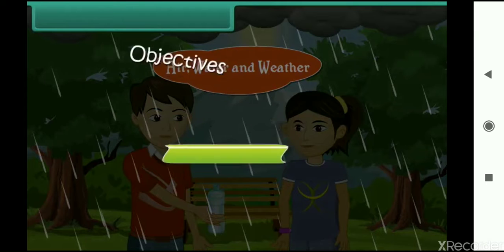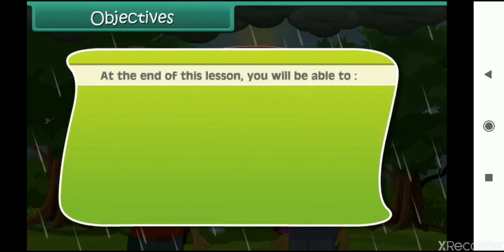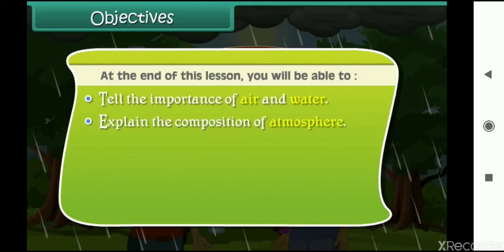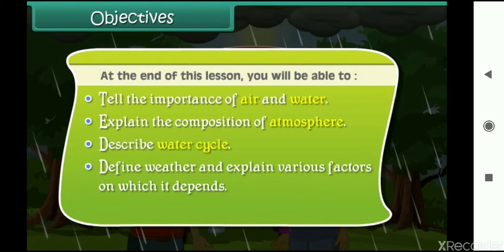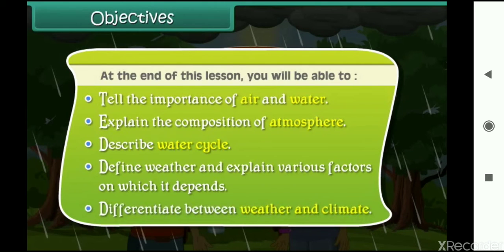Objectives: At the end of this lesson you will be able to tell the importance of air and water, explain the composition of atmosphere, describe water cycle, define weather and explain various factors on which it depends, and differentiate between weather and climate.